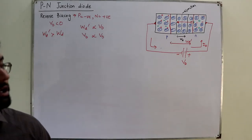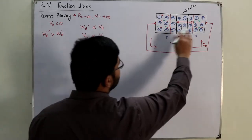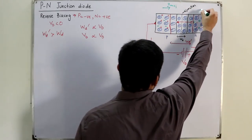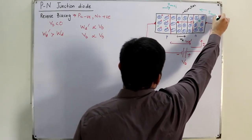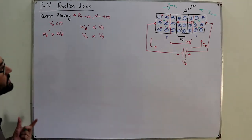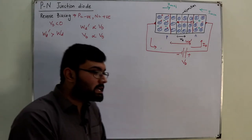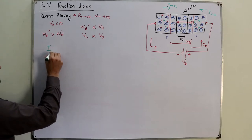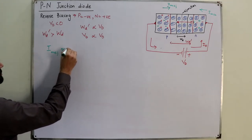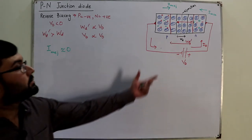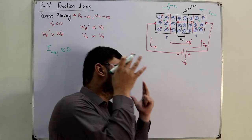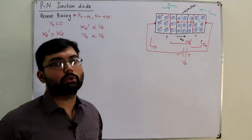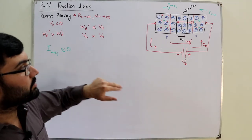Now, considering the majority charge carrier current and the minority charge carrier current: the direction for I_majority would be forward, and the opposite direction for I_minority. In the reverse bias case, the majority charge carriers face a much greater barrier potential to overcome, so the majority charge carrier current is almost equal to zero — due to the greatly increased depletion region, the increased electric field, and the greater barrier potential.